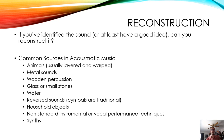With reconstruction — once you've identified the sound, can you create it yourself? There are some really common sources used in acousmatic music: animals like birds, cats, dogs — or layering noise from a bear or crocodile and warping them, changing their spectrum and cross-multiplying their envelopes. Metal sounds — Tibetan prayer bowls are a favorite, or a nice-sounding mixing bowl. Wooden percussion like claves, bones, handheld wooden instruments. Glass or small stone. Water — composers really love to play with water. Reversed sounds — cymbals are traditional but anything can be reversed. Household objects, things from your fridge.